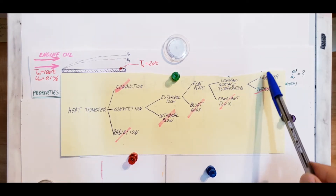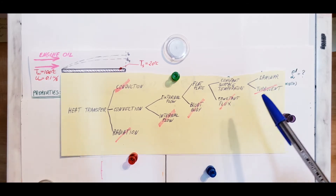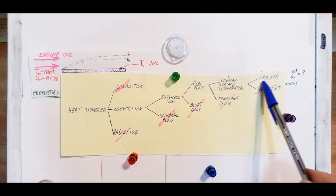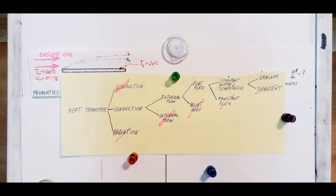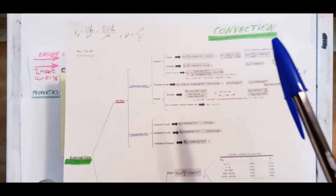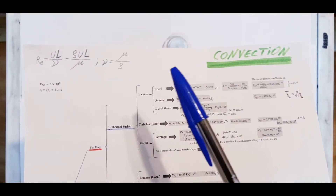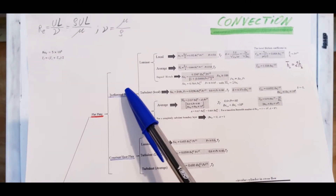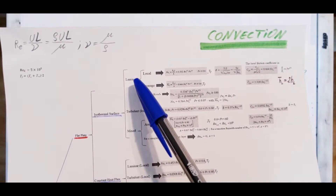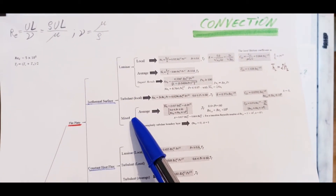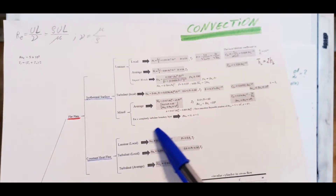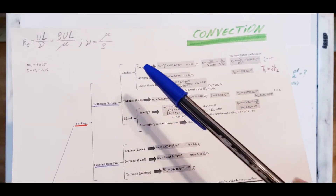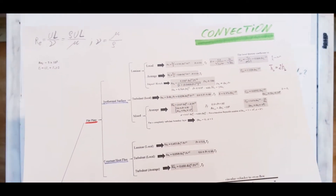Right now, I don't know if I'm in laminar or turbulent flow — we're going to have to find that out. From the formula sheet, we've narrowed down to: external flow, flat plate, isothermal surface — laminar, turbulent, or mixed. We need to determine our Reynolds number; that's what will tell us laminar or turbulent.